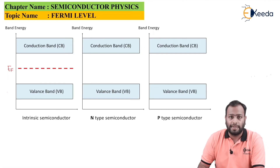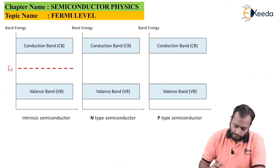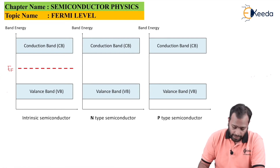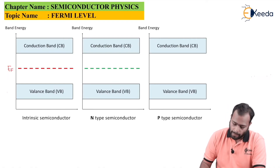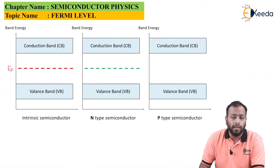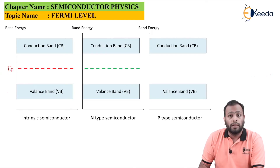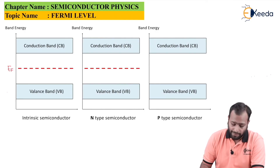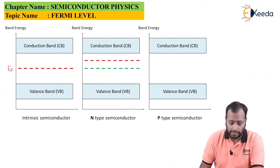What happens in an N-type semiconductor? We know that an N-type semiconductor is made by adding a pentavalent impurity to an intrinsic semiconductor. If this N-type semiconductor had initially been intrinsic, this would be its Fermi level. Since a pentavalent impurity has been added, it has extra electrons — which means more electrons overall. So the Fermi level shifts towards the conduction band. This is what the Fermi level is expected to be, but in reality the Fermi level shifts toward the conduction band.